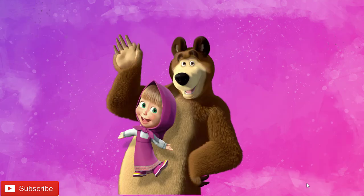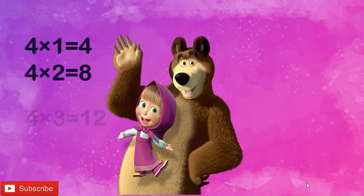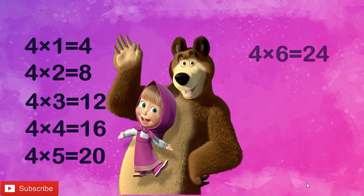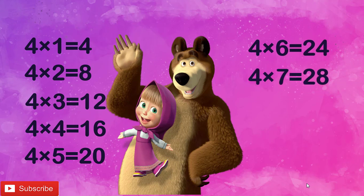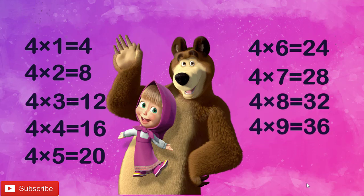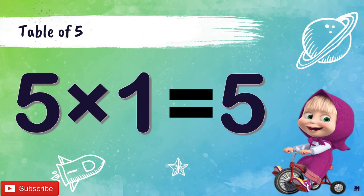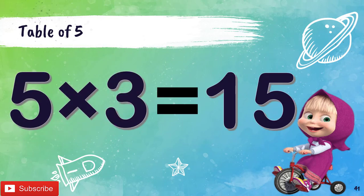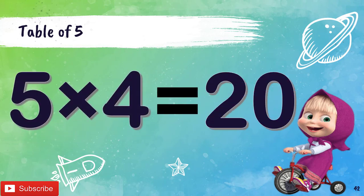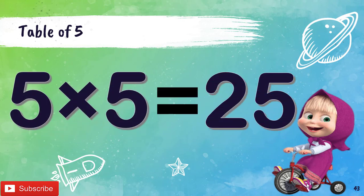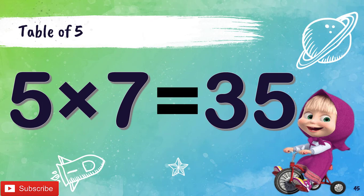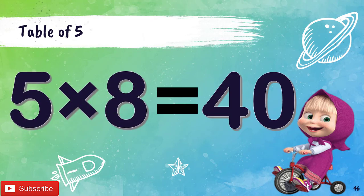Now let's revise once children. 4 1's are 4, 4 2's are 8, 4 3's are 12, 4 4's are 16, 4 5's are 20, 4 6's are 24, 4 7's are 28, 4 8's are 32, 4 9's are 36, 4 10's are 40.